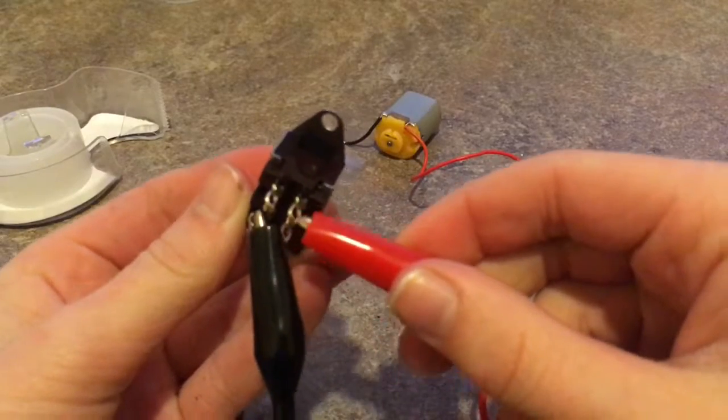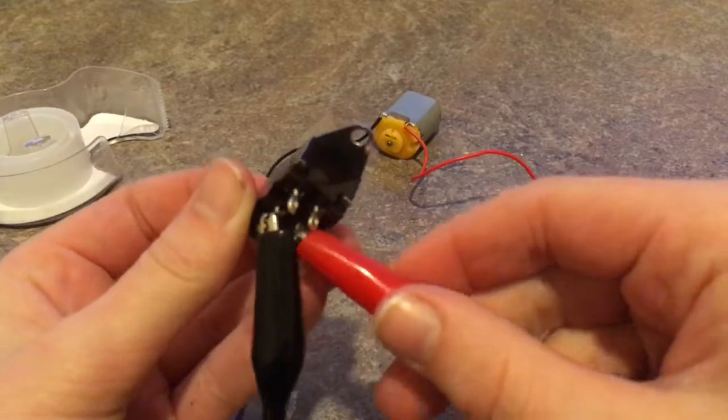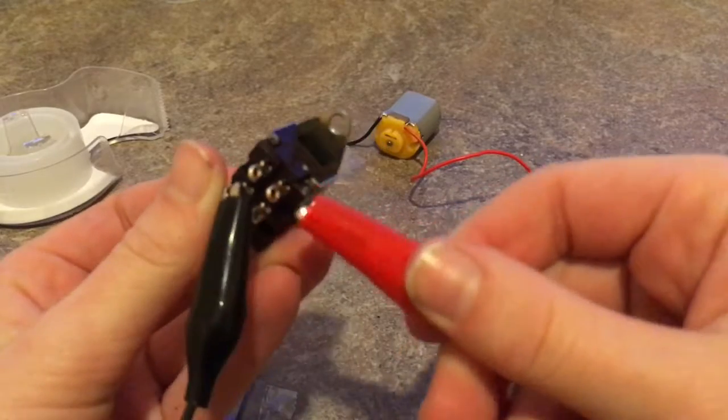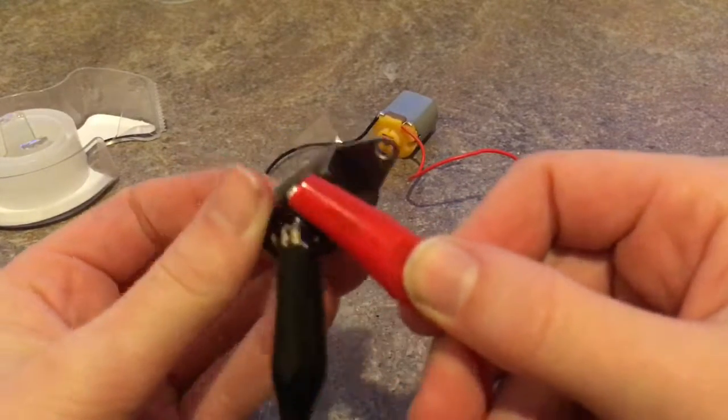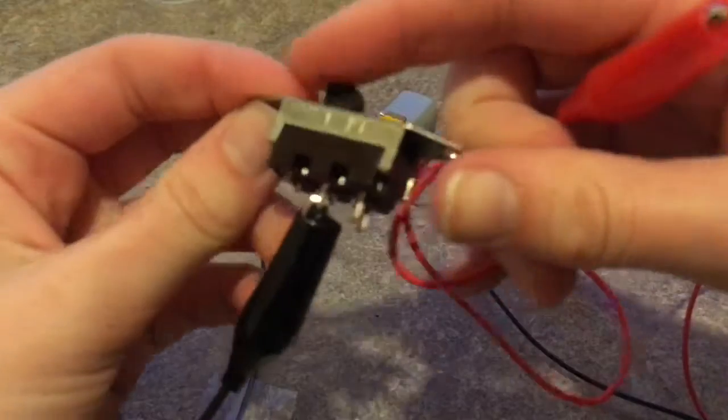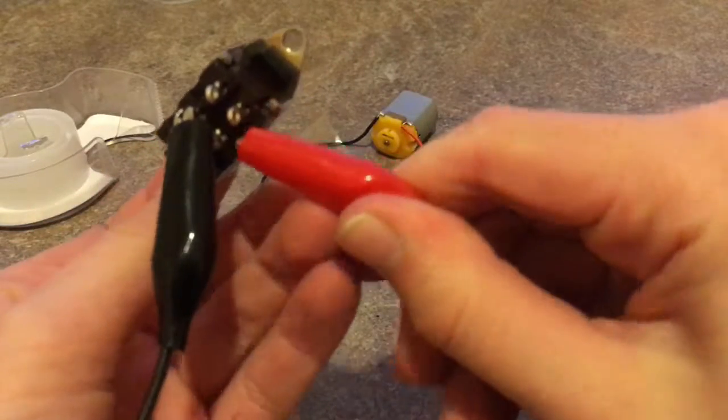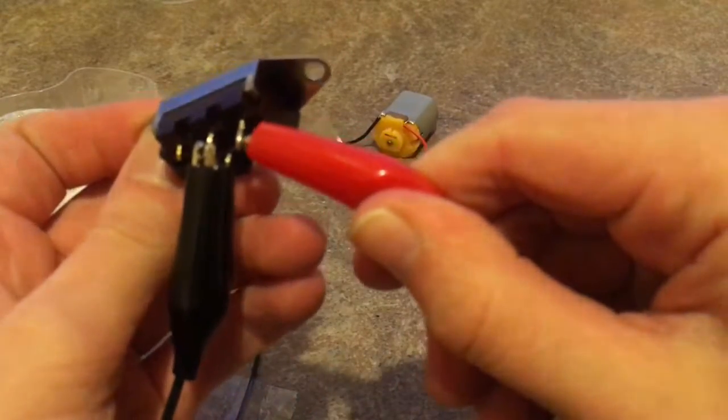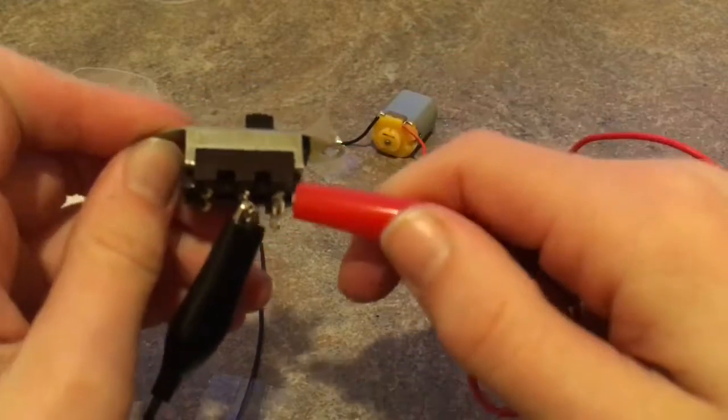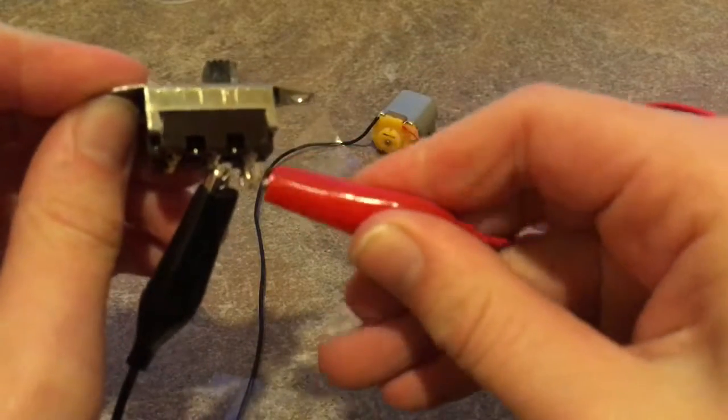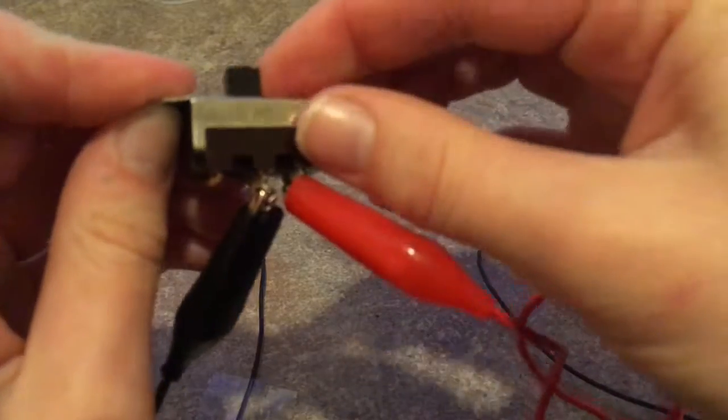So the easiest way to find which one of these little hoops you want to connect to is just take your metal piece and then just touch all of these little hoops like that. You see nothing happen. So switch your switch and then touch them all again. So that one's making it spin, so you just want to clip onto there and switch off.